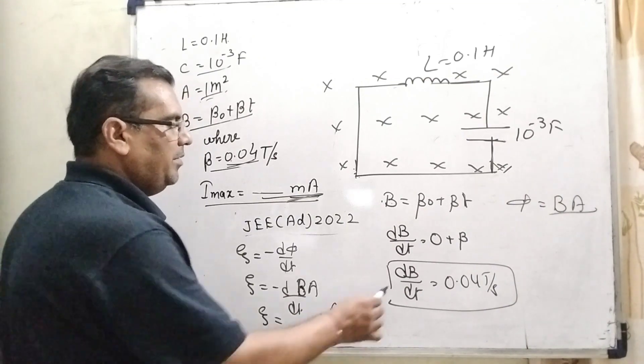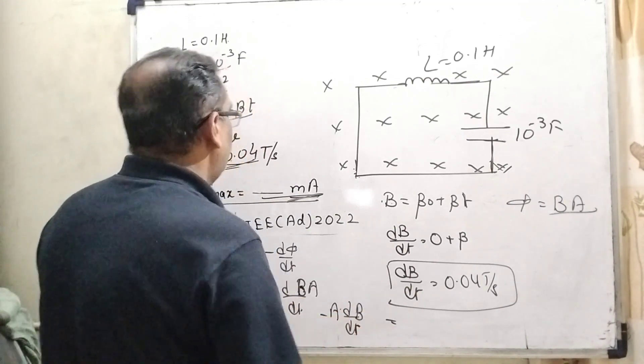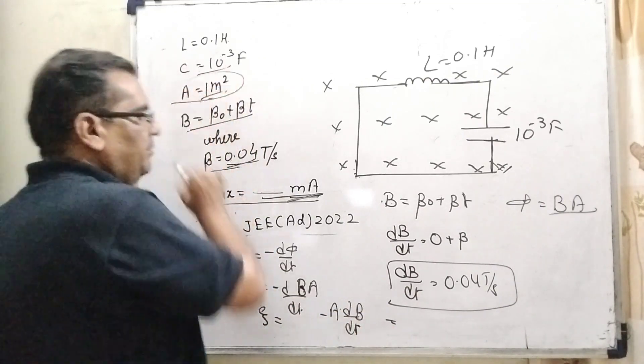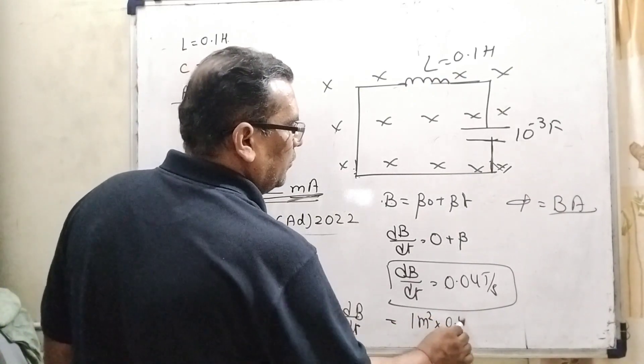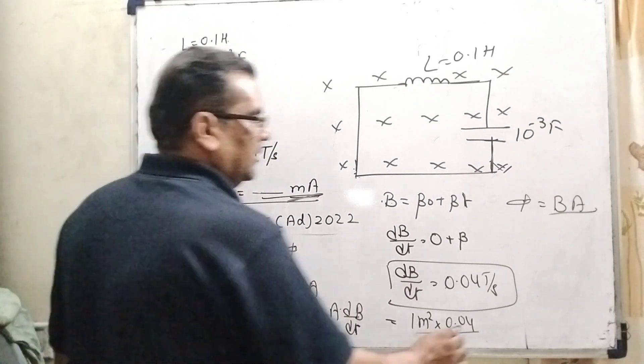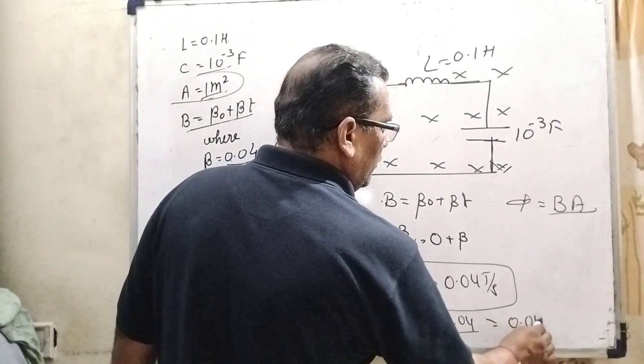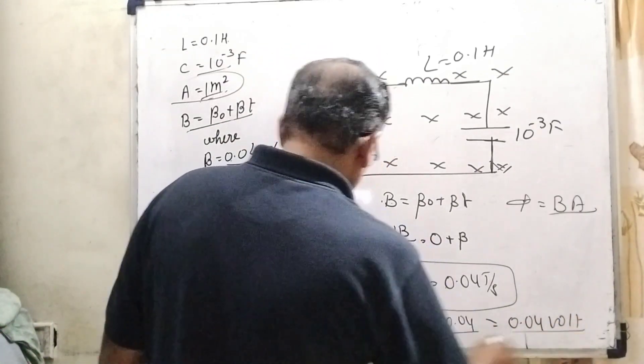And what is the value of dB by dt? And what is the value of A? Here A is 1 meter square and 0.04. Multiply, then we will get 0.04 volt.